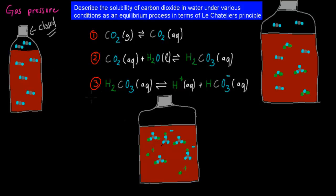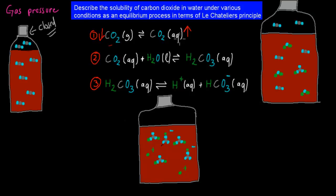When it comes to pressure, if we increase pressure, we decrease the gaseous carbon dioxide and increase the aqueous carbon dioxide, because the pressure forces more of the CO₂ to dissolve. So increasing pressure means we increase the dissolved carbon dioxide.